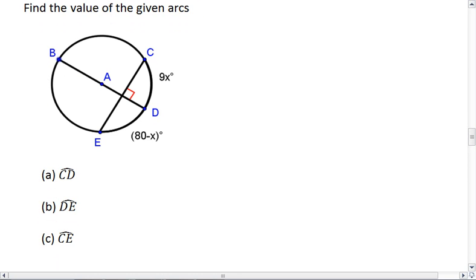So in this picture, we are told that we have perpendicular and it's a diameter since it goes through point A. This means that this chord CE is bisected. Not only that, but arc CD is congruent to arc DE.